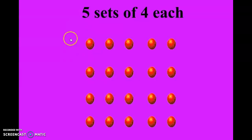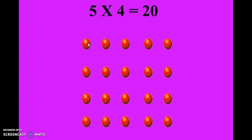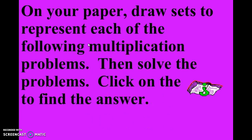Here we see five sets of four oranges — write down what you think. Five times four — therefore we have twenty oranges. On your paper, draw sets to represent each of the following multiplication problems, then solve the problems. Click to find the answer.